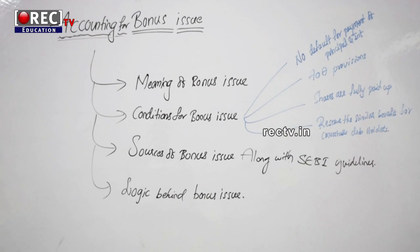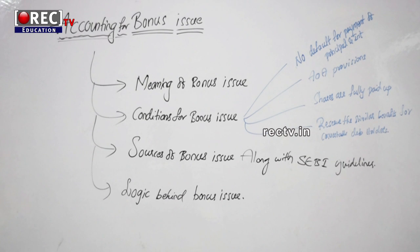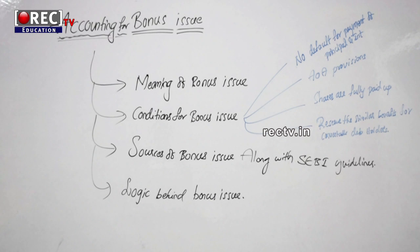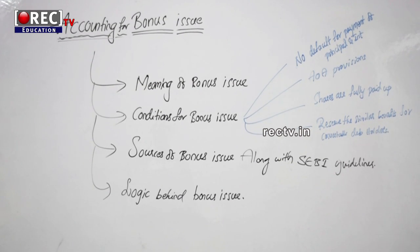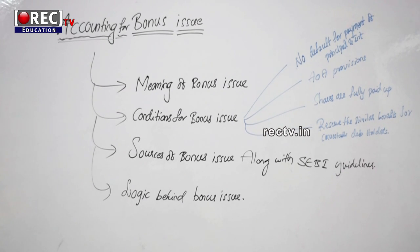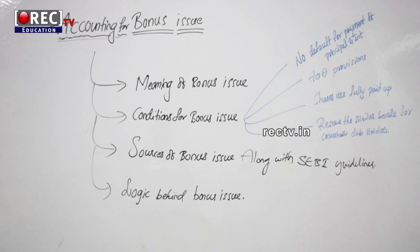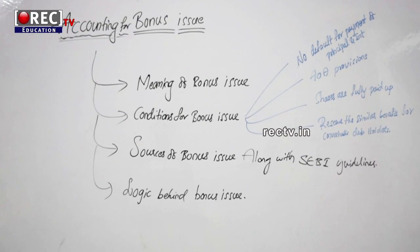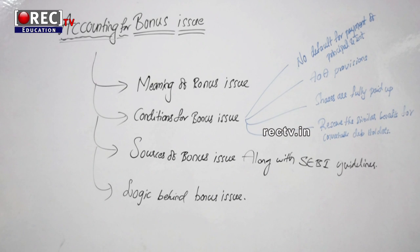So friends, let us discuss one by one. For the first condition — no default for payment of principal and interest — it means before going to issue bonus shares, your company should not have any default in paying interest or principal to the debenture holders. If all three conditions are satisfied, the company can issue bonus shares.